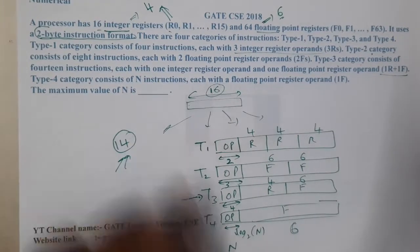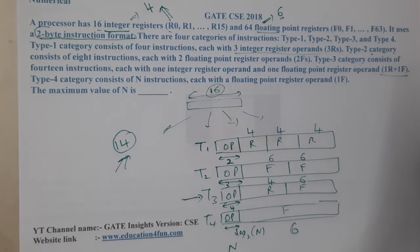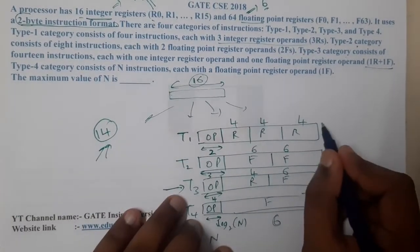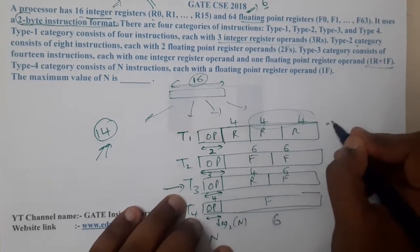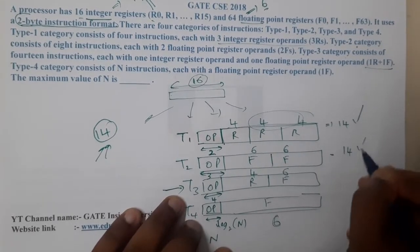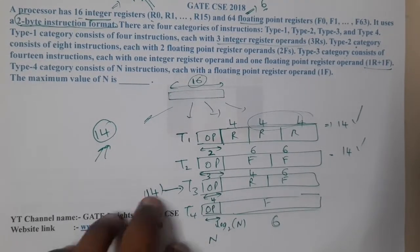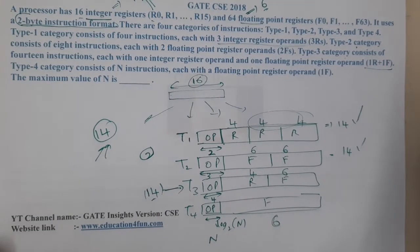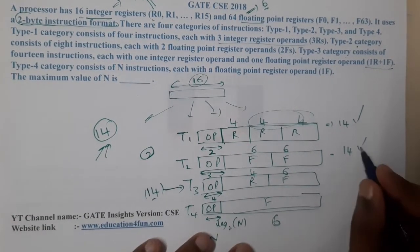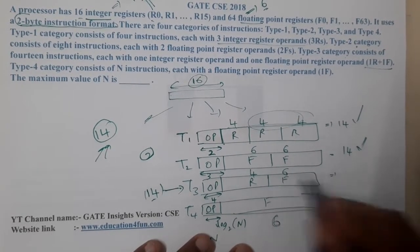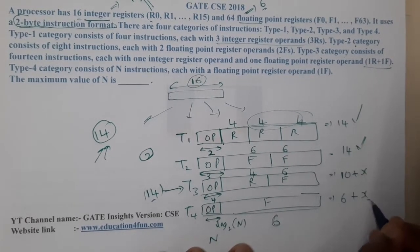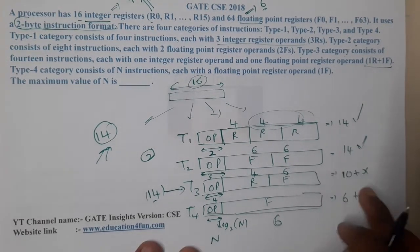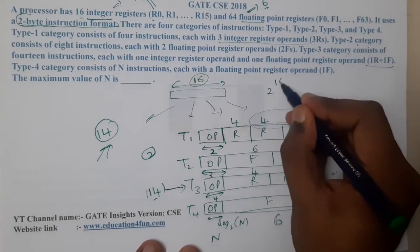What they are asking is the value of n. This is an interesting question, similar to IP addressing problems in computer networks. Each instruction type must fit within 16 bits total. For Type 3, since there are only 14 instructions out of a possible 16 (with 4 opcode bits), 2 bit-patterns are wasted.